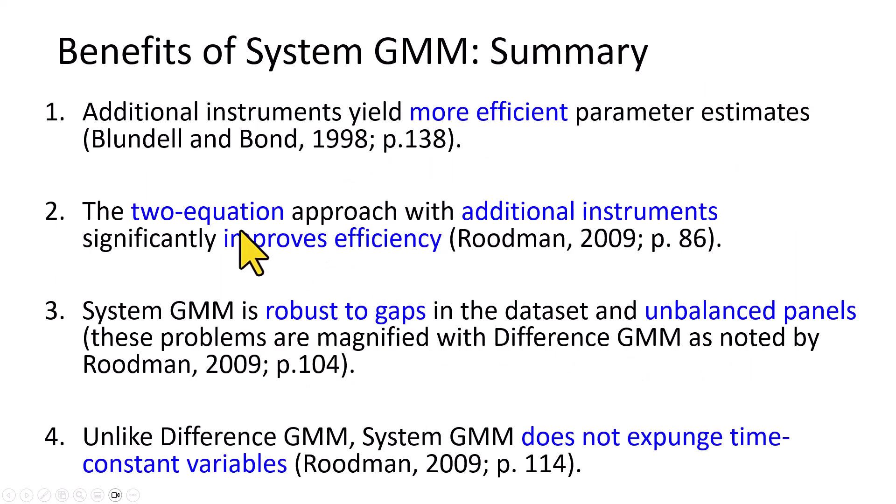What are the benefits of system GMM? Number one, the additional instruments have been found to yield more efficient parameter estimates. Number two, the two-equation approach with additional instruments has been found to significantly improve efficiency. Number three, this estimator system GMM is robust to gaps in the dataset as well as unbalanced panels.